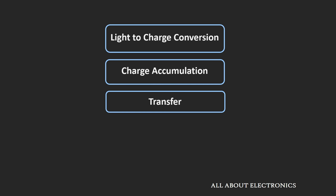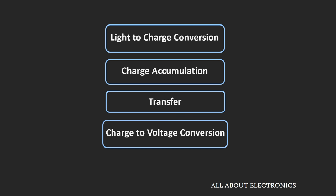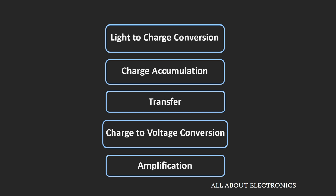After transfer, this charge is converted into voltage, and this voltage is amplified using amplifiers. These are the common steps seen in both sensors, but depending upon the sensor, the sequence might vary.